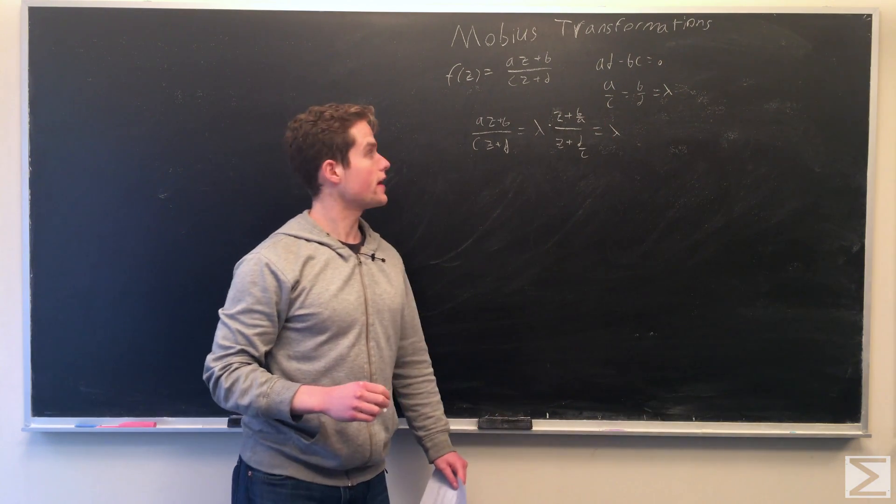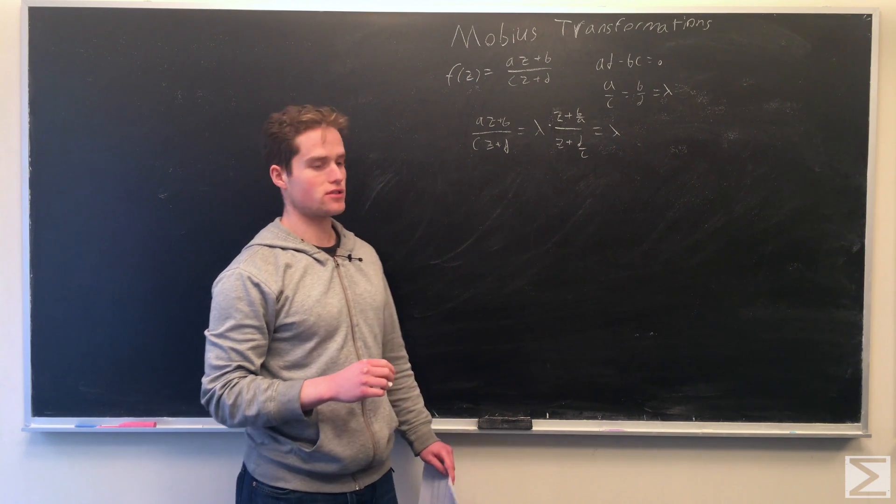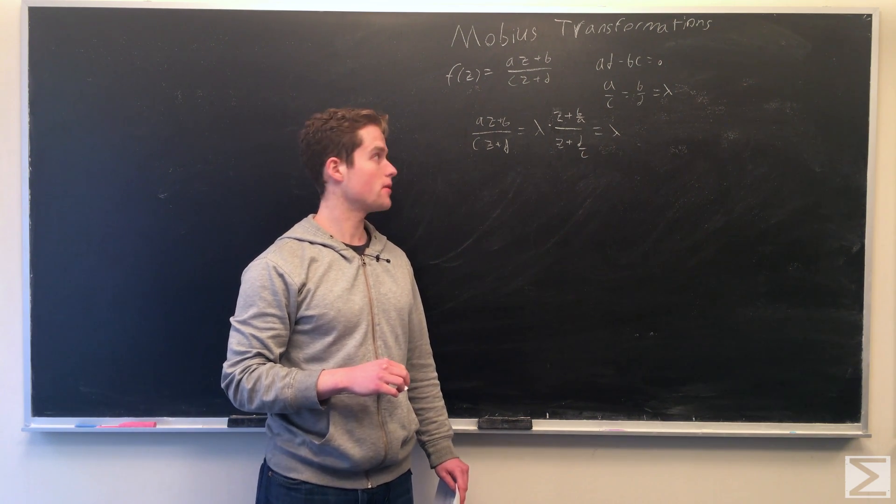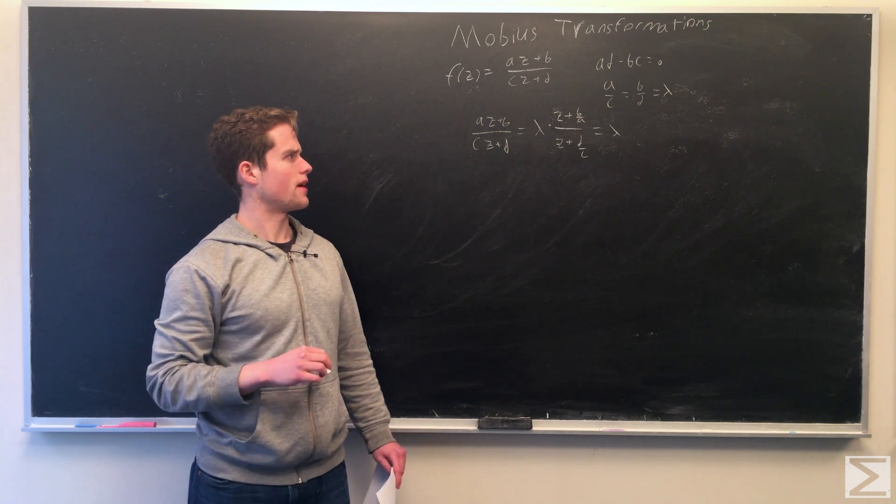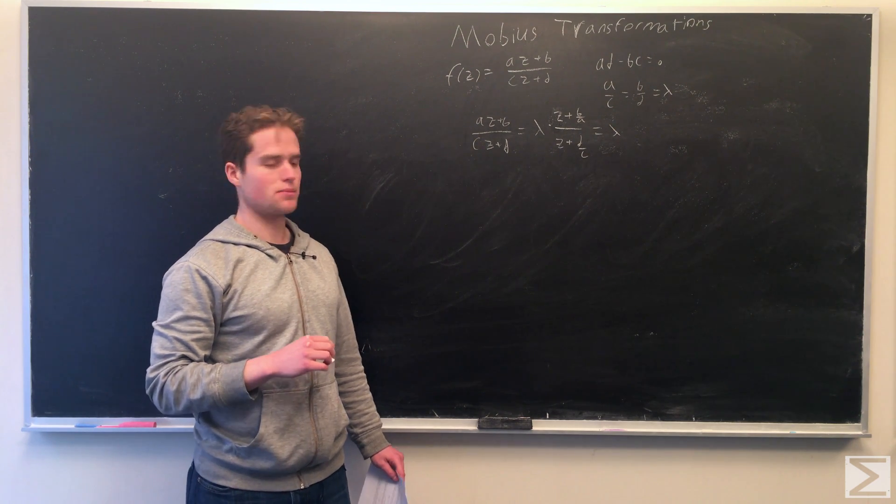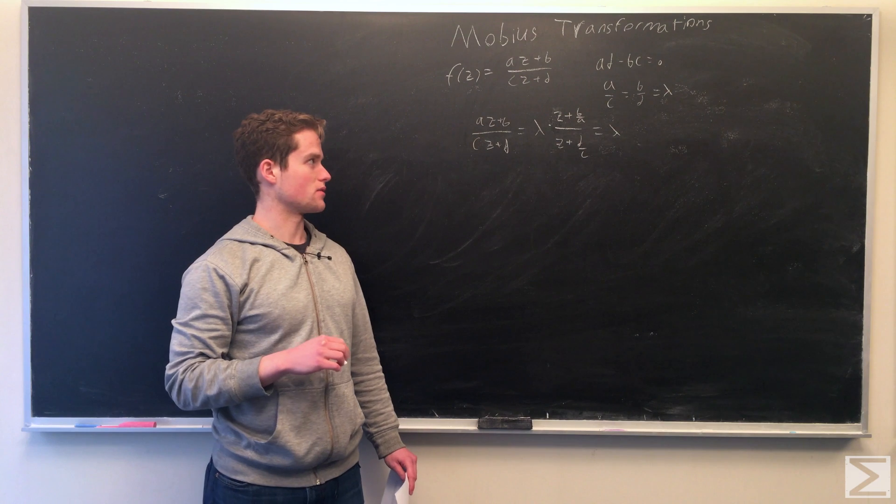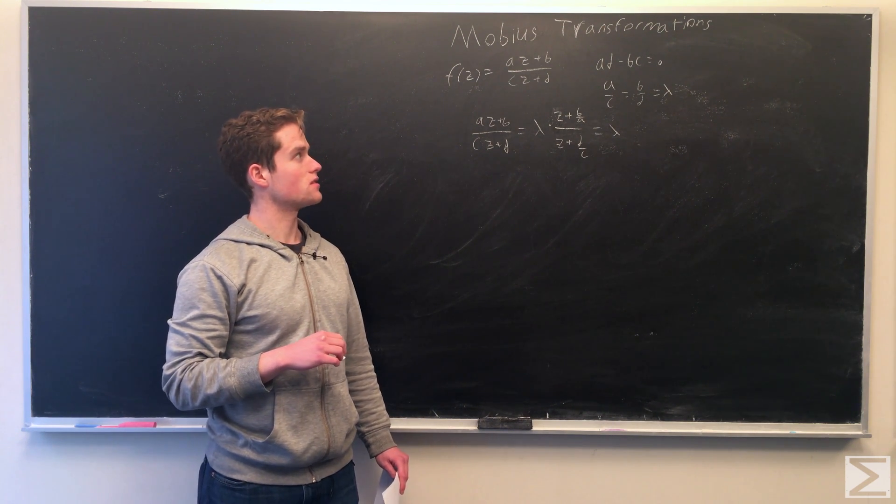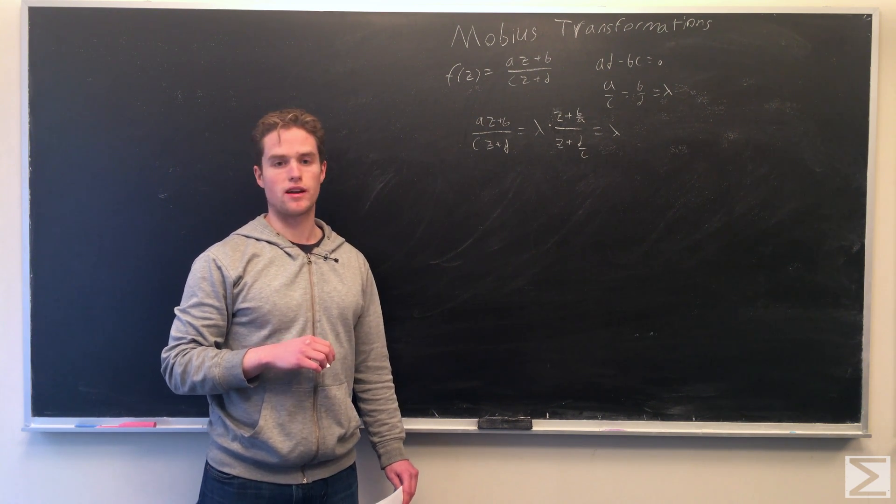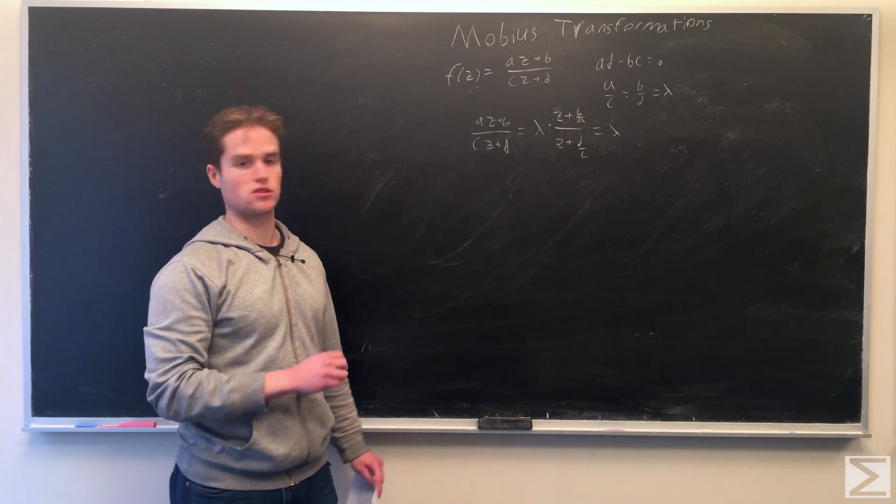First, we're going to note if ad minus bc equals 0, we can write a over c equals b over d equals lambda. So az plus b over cz plus d equals lambda times z plus b over a over z plus d over c. And b over a and d over c are also equal, so that just equals lambda.